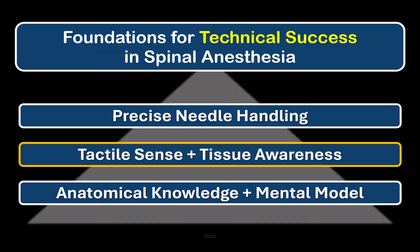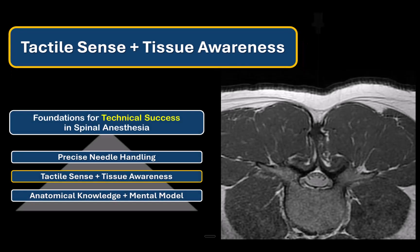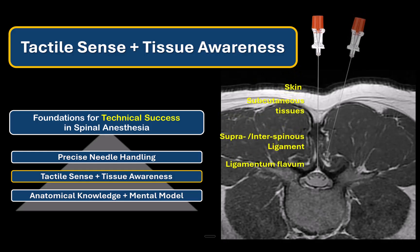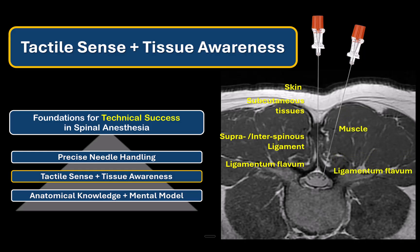There's a lot more information that we can get from our needle tip than just bony contact. With a little bit of deliberate, mindful practice and slow smooth motion, you can sense the different layers and tissues that you're passing through: skin, subcutaneous fat, supraspinous and interspinous ligaments, paraspinal muscles, ligamentum flavum. All of them have a characteristic feel, and this provides important clues as to whether we're progressing along the right track or not.